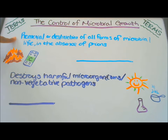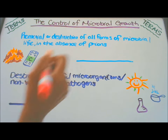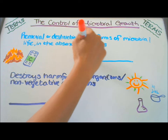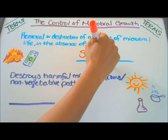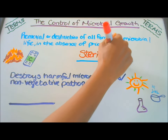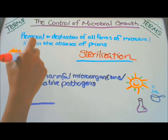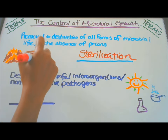Our first definition is the removal or destruction of all forms of microbial life, in the absence of prions. Our first term is sterilization. Heat is used to kill microbes, and the sterilizing agent is called a sterilant.